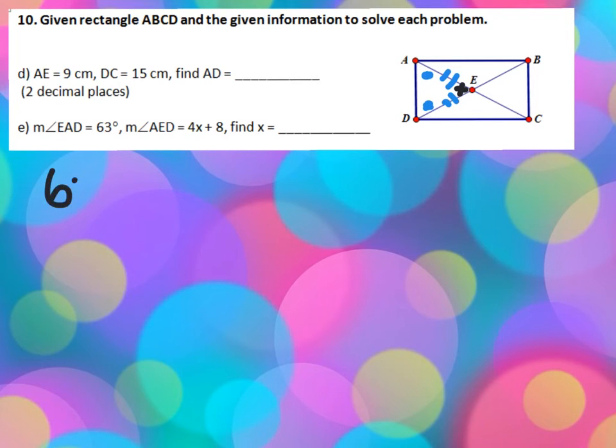So, we'd have two 63 angles, those would be our two base angles. Our vertex angle is 4x plus 8, angle 1, 2, and 3. And they equal 180.